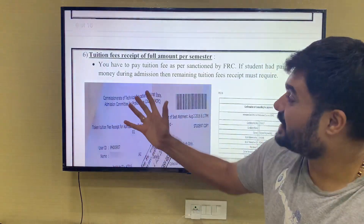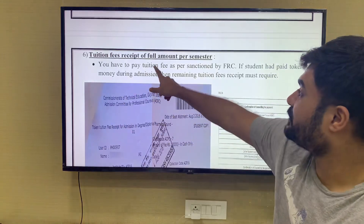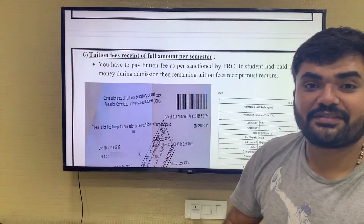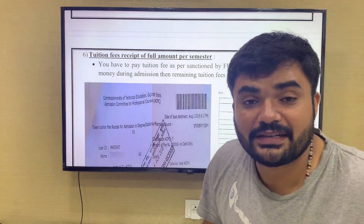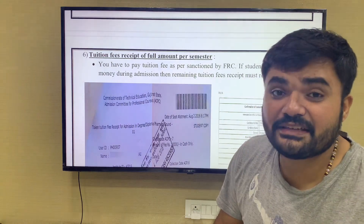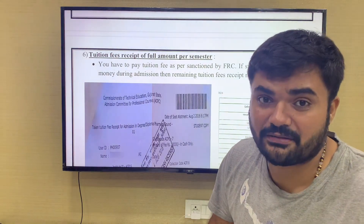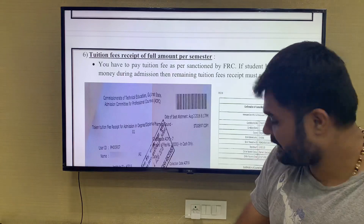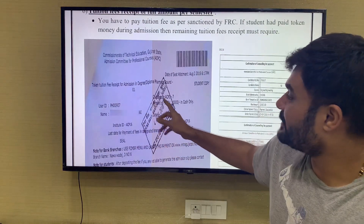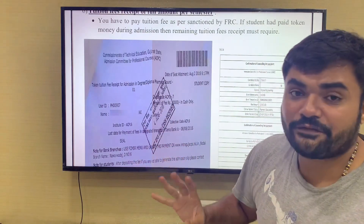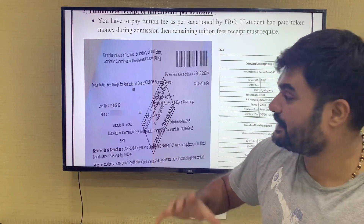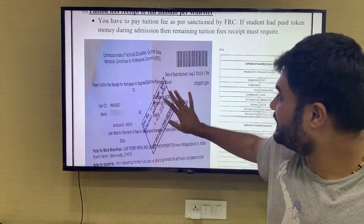You have to upload an institution fee receipt for the full amount per semester. You need to get the fee receipt for MYSY scholarship. This is also yearly, but you have to get the fee receipt per semester. This is an example of a fee receipt — this is a token fee receipt.